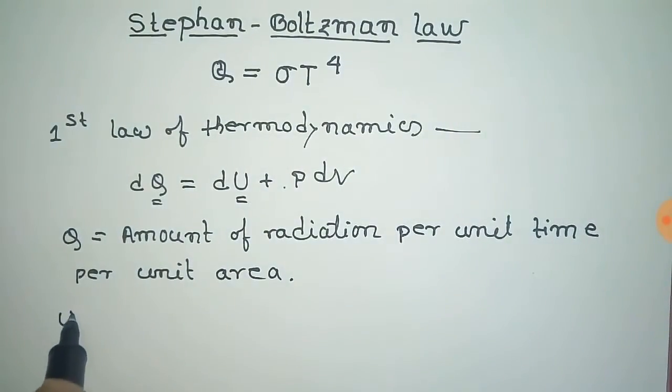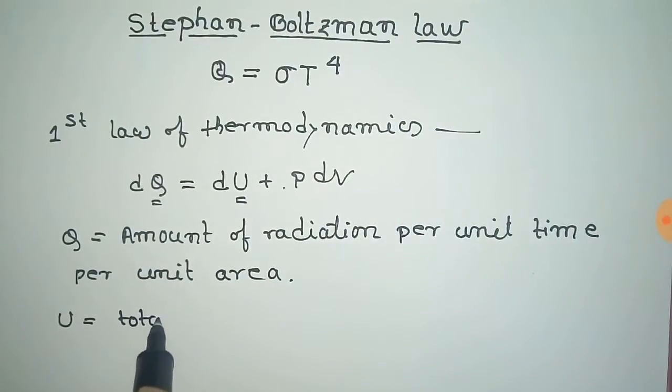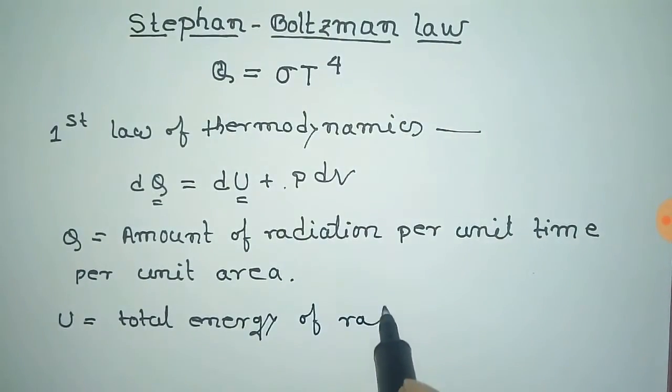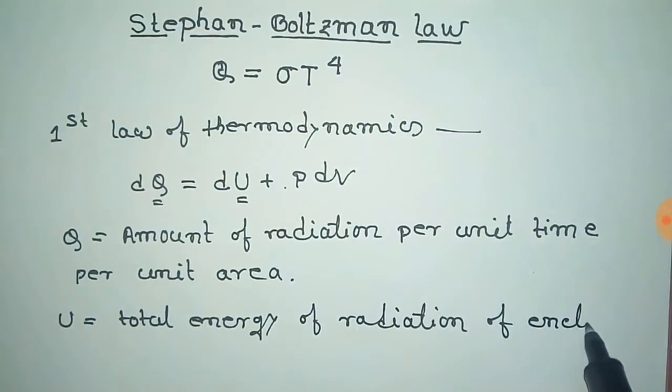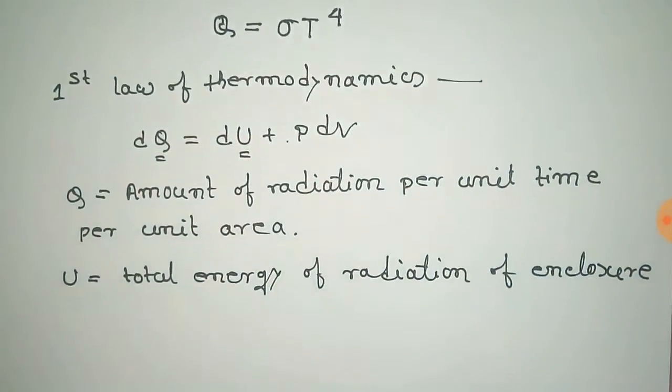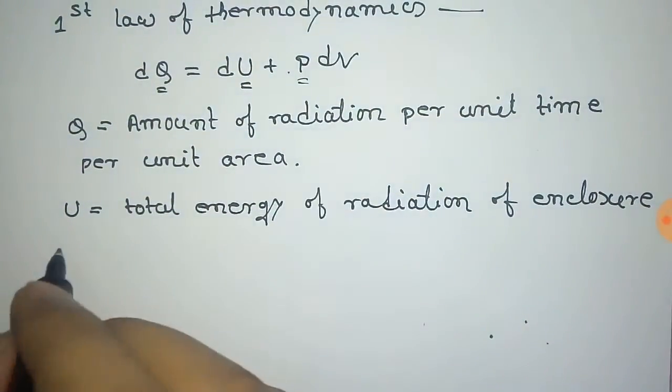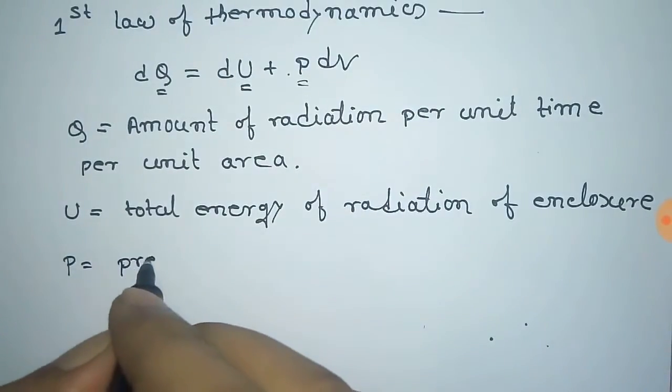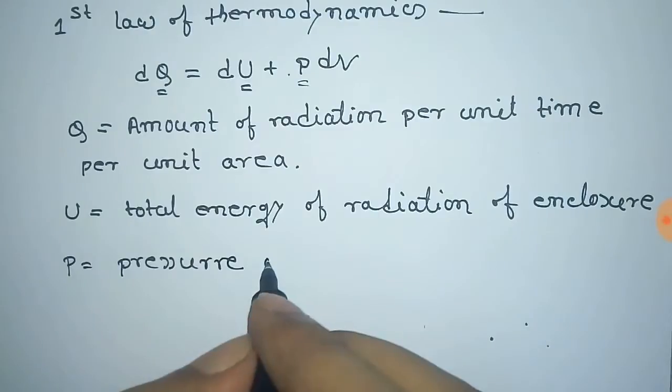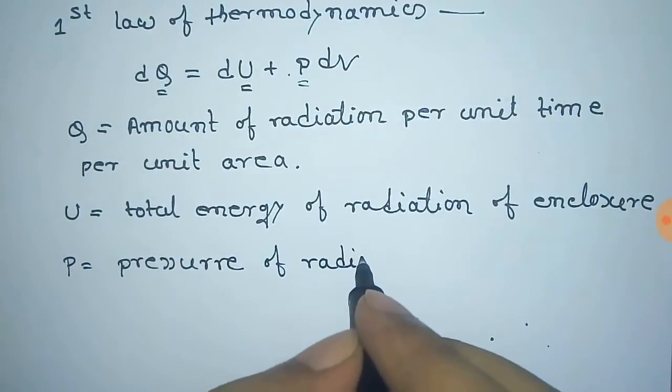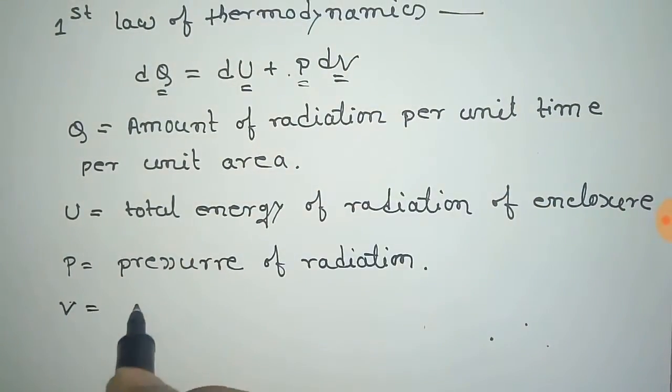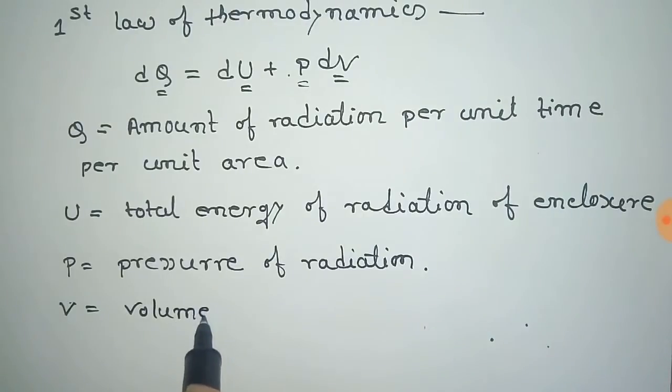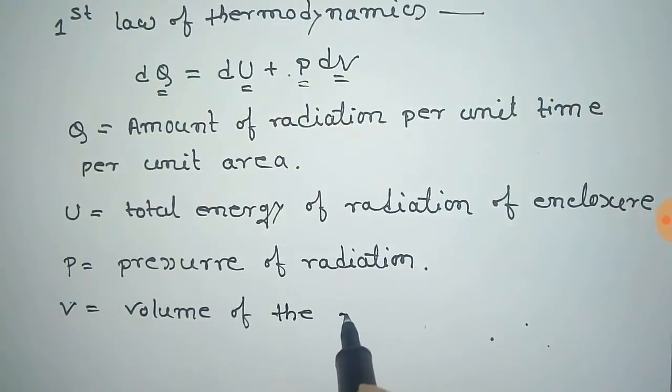U is the total energy of the enclosure, which is the radiation energy of the enclosure. P means the radiation pressure, and V indicates the volume of the enclosure.